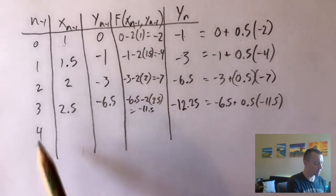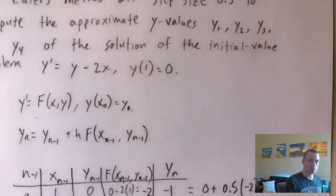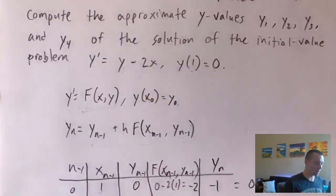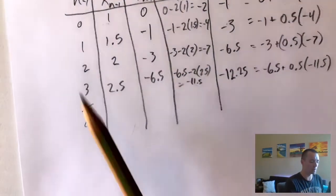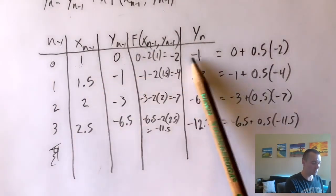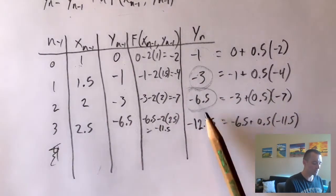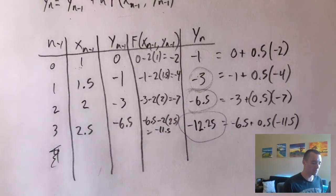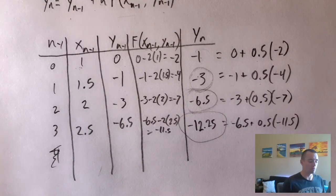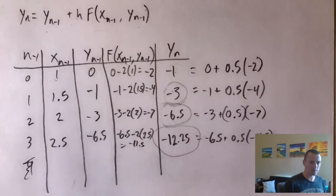I realized I put an extra row in the table — we don't need it. Since the y column was labeled y_(n−1) rather than y_n, this column corresponds to y₁, y₂, y₃, and y₄ respectively. We've already found those four y values, which are our estimates to the solution of the initial value problem.